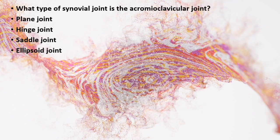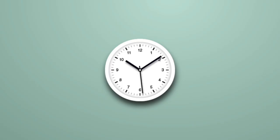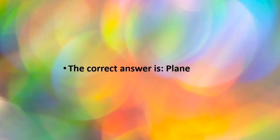Quiz: Which type of synovial joint is the acromioclavicular joint? Plane joint, hinge joint, saddle joint, or ellipsoid joint? The correct answer is plane joint.